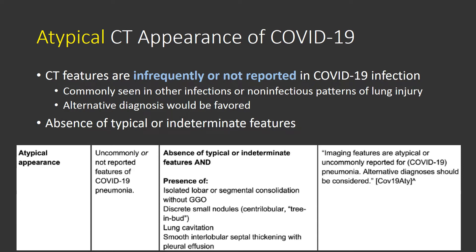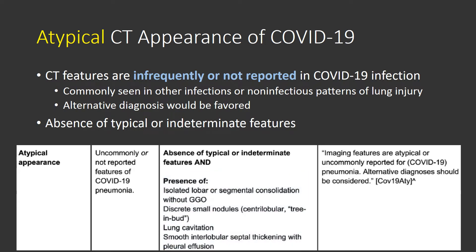An atypical CT appearance for COVID-19 demonstrates features that are infrequently or not reported in the literature, more commonly seen in other infectious or non-infectious patterns of injury — and an alternative diagnosis would be favored. There should be an absence of typical or indeterminate features, which is important because two co-existent processes could be present. What makes something atypical includes lobar or segmental consolidation, discrete small nodules such as a bronchiolytic pattern, centrilobular tree-in-bud opacities, lung cavitation, or interlobular septal thickening with pleural effusions. Standardized reporting language notes these findings are atypical or uncommonly reported for COVID-19, with COVID-19 again in parentheses.